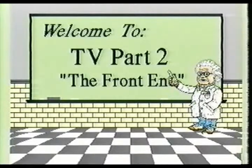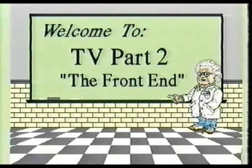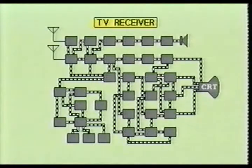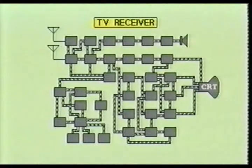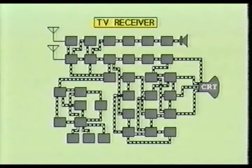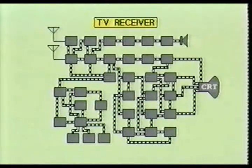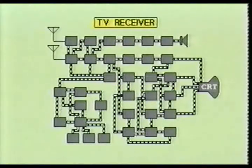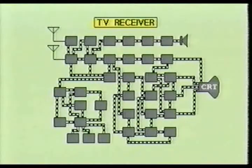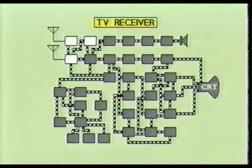Welcome to TV Part 2 of the You Can Do video series designed to teach you the basic fundamentals of color television receivers. As you recall, in TV Part 1, you gained an overall view of the various stages required to receive, decode, and reproduce the video image with sound transmitted through the air by your local television station. Here in Part 2, we will examine in detail those circuits required to receive and detect the video image and sound.